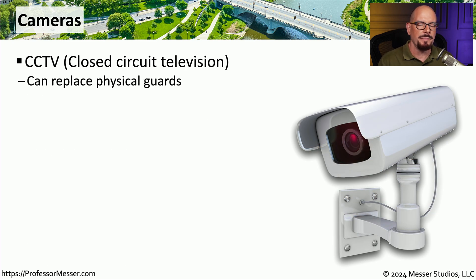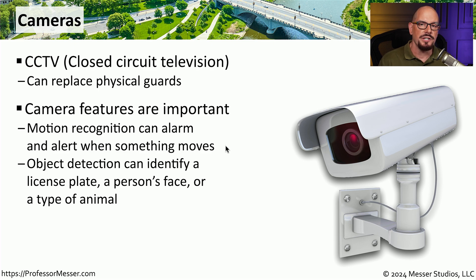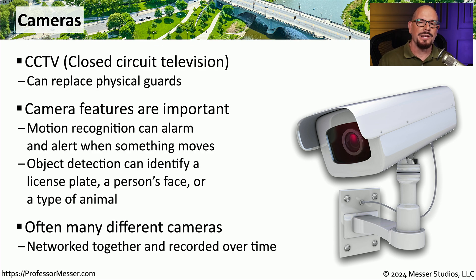Many organizations will supplement their physical security through the use of cameras, sometimes referred to as CCTV for closed circuit television. This is a very common security technology implemented in nearly every organization. Some modern cameras can provide motion detection so you know if anyone is in a particular area, and they might also be able to read license tags or identify a user based on facial recognition. Usually many cameras are deployed around a building or campus and networked back to one central point, where information can be stored over a long period of time. This allows the administrator to go back in time and view every video feed that captured information during a particular time frame.